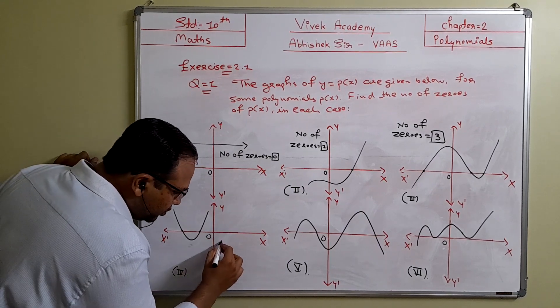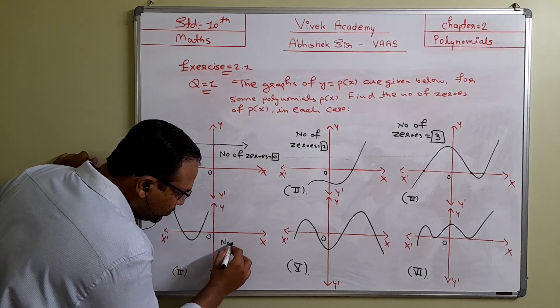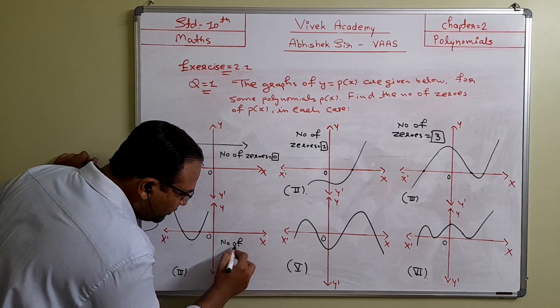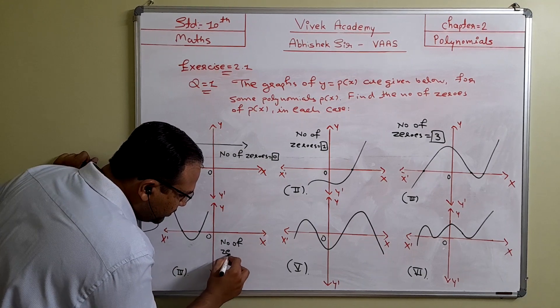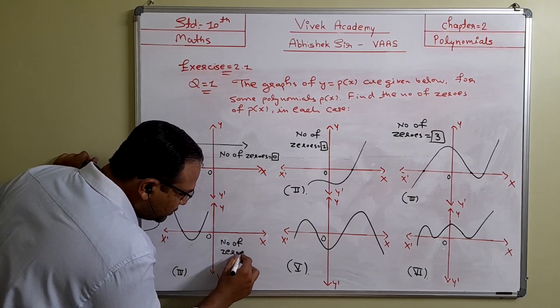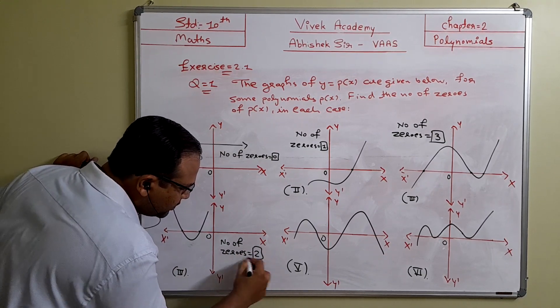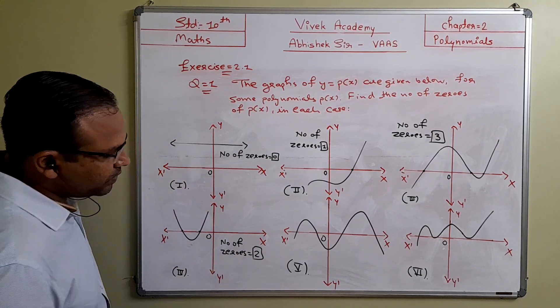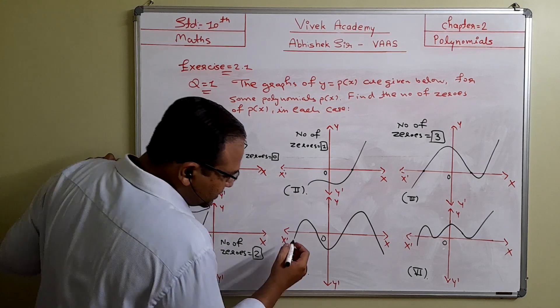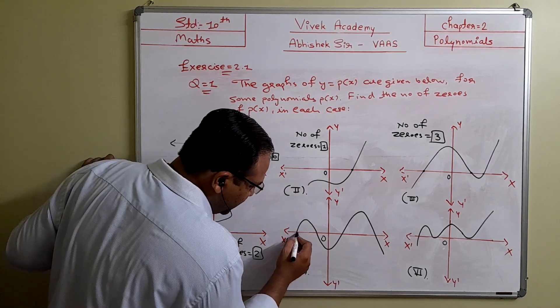In question 4, the graph is intersecting the x-axis at one and two points, so the number of zeros is 2.